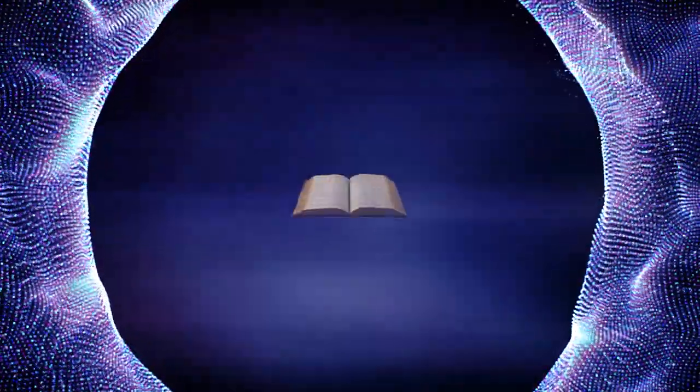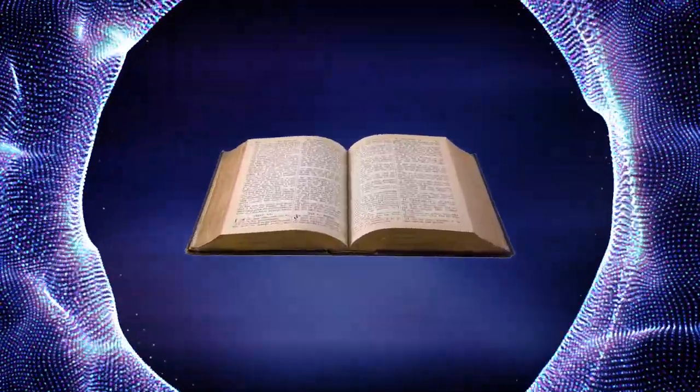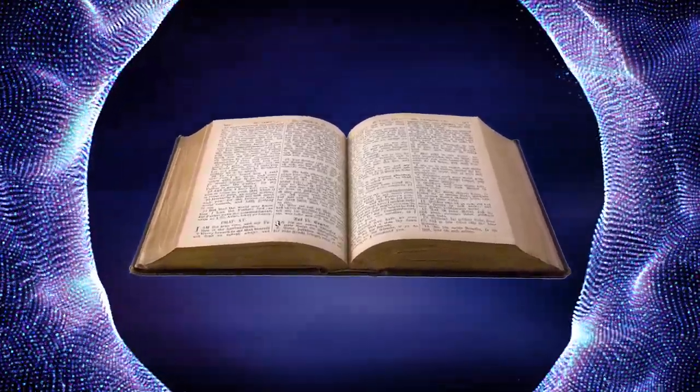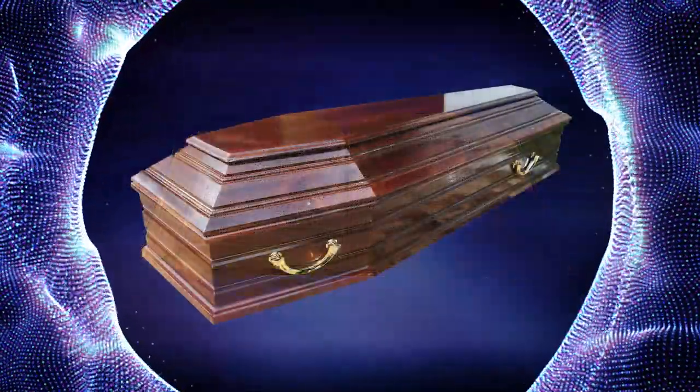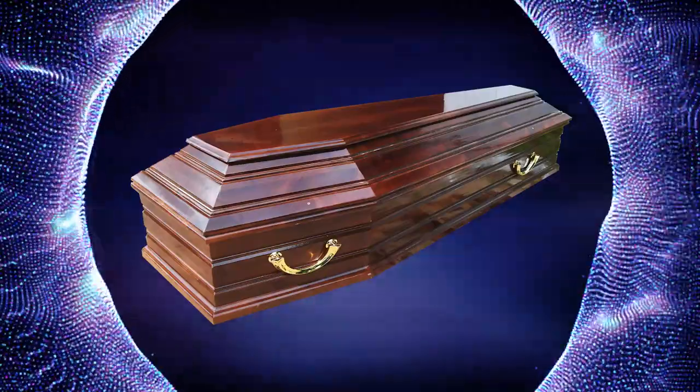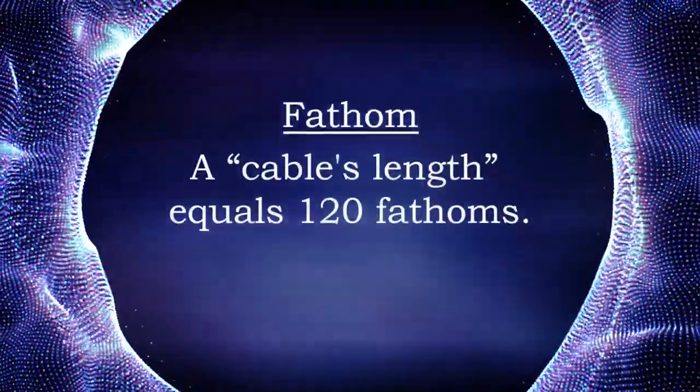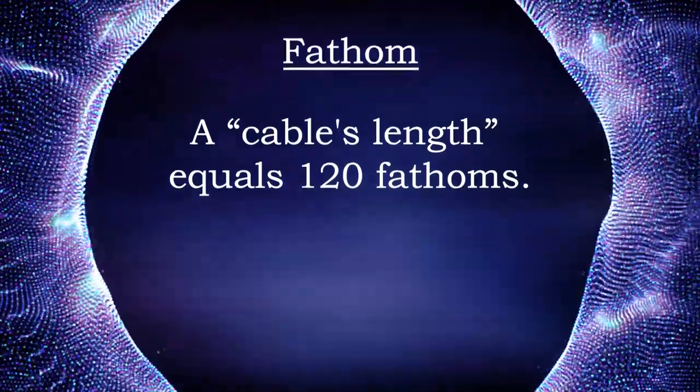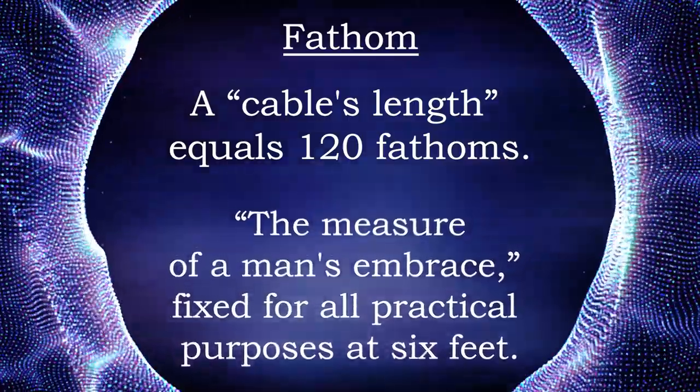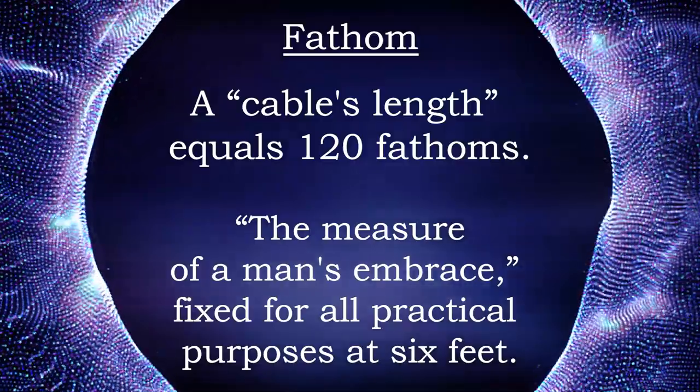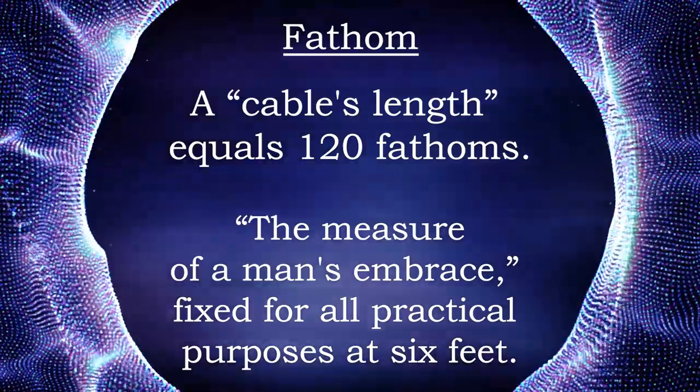The ritual anticipates that after this life, every master mason shall be decently interred, but the penalty of our obligation in the third degree involves the very opposite of that idea. I shall therefore close this lecture with a few words on the dimensions of the grave of the third degree and their significance. I have spoken of fathoms, saying that a cable's length equals 120 fathoms, but the fathom is not named in the ritual. It may be defined as the measure of a man's embrace, fixed for all practical purposes at six feet, and therefore, although not expressly named, it is the length of the grave which the trusty fellow crafts of our traditional history are said to have prepared.